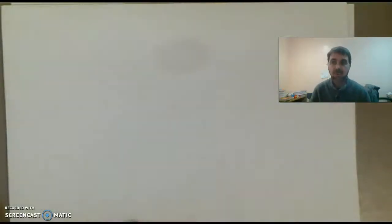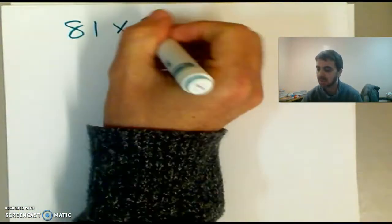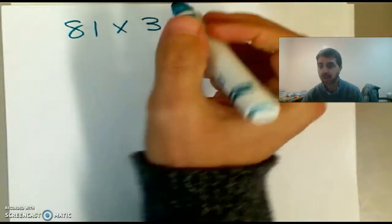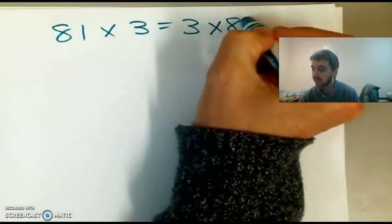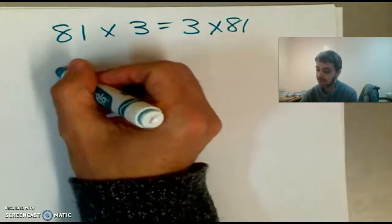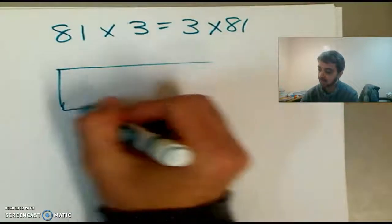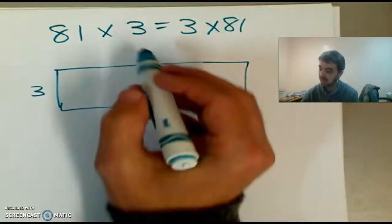Alright, so you have some problems to do on the next slide. The first problem is going to be 81 times 3, or you could think of it as 3 rows of 81. So again, we're going to draw a rectangle.